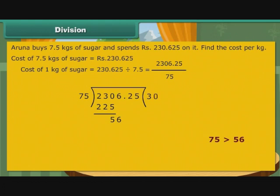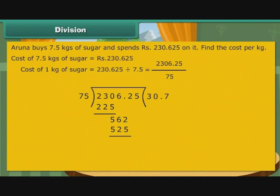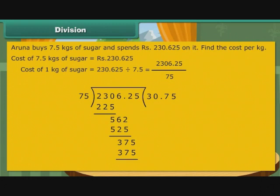Bring 2 also down. Since 2 appears after the decimal point, place a decimal point to the right of 0. The new number 562 holds 7 times 75, that is 525. Subtract and write the difference 37 below. Bring 5 down. The new number formed is 375. It holds 5 times 75 exactly. Write 5 to the right of 7 and 375 beneath 375. Subtract. As the difference is 0, write a cross to mark the end of the division operation. Therefore, the cost of 1 kg of sugar is Rs. 30.75.